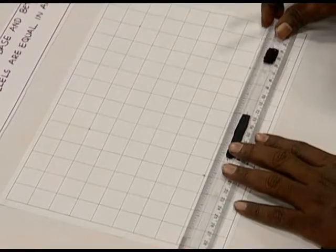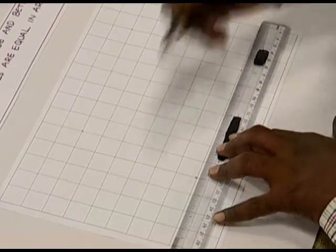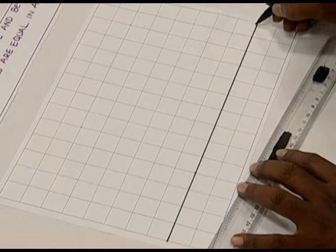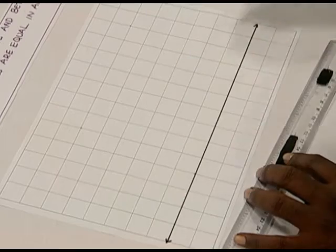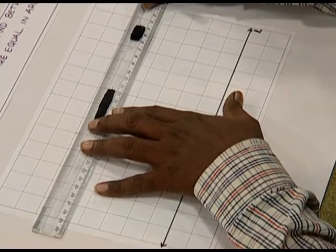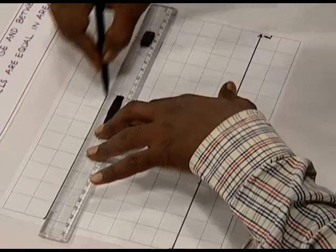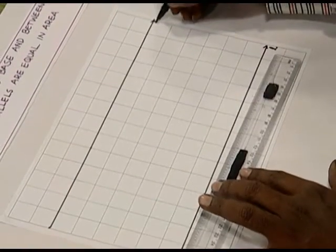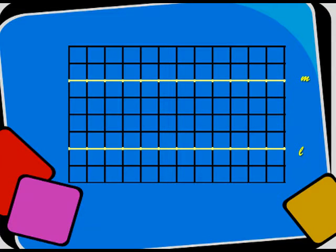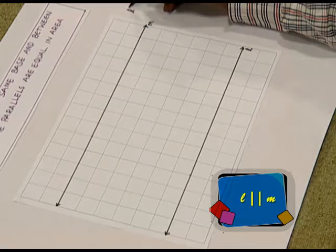Now we draw two parallel lines on this squared paper. I draw a line L and another parallel line, and we name it as M. Now we have two lines, line L and line M. These two lines are parallel to each other — L is parallel to M.